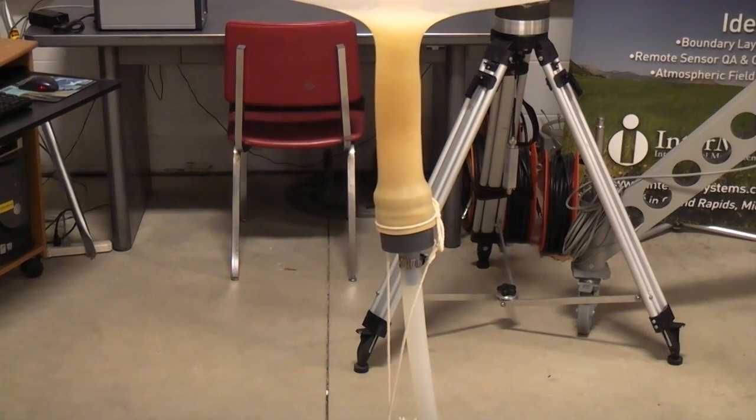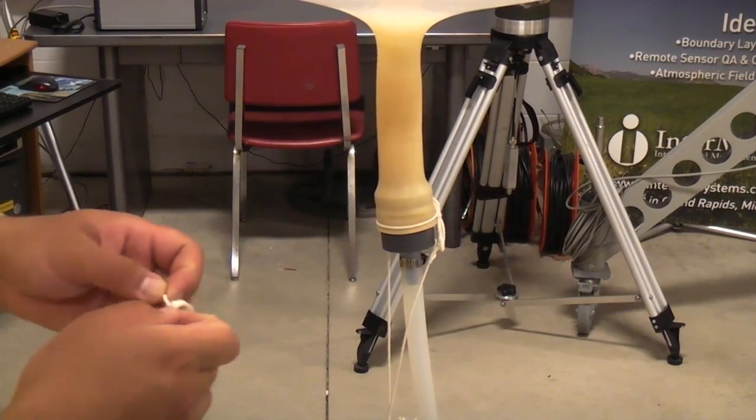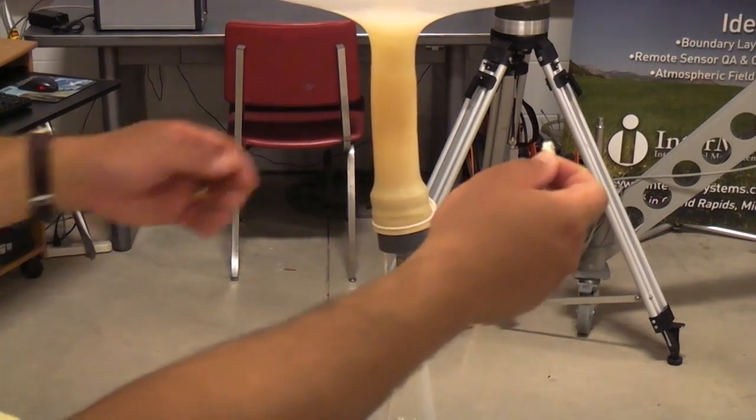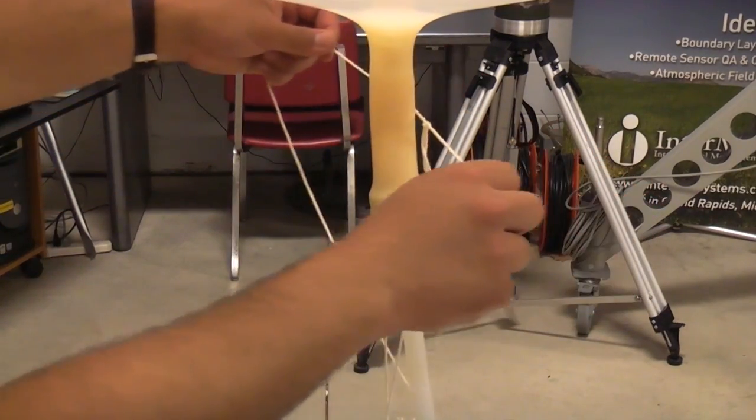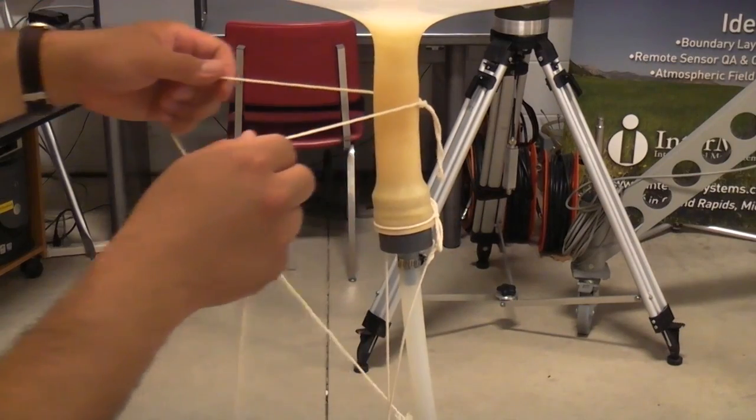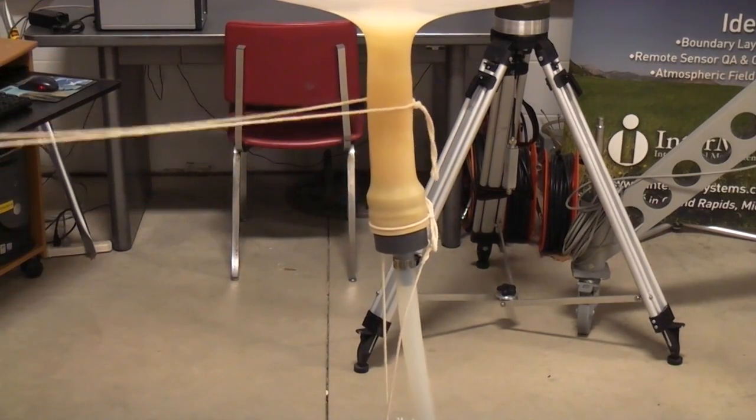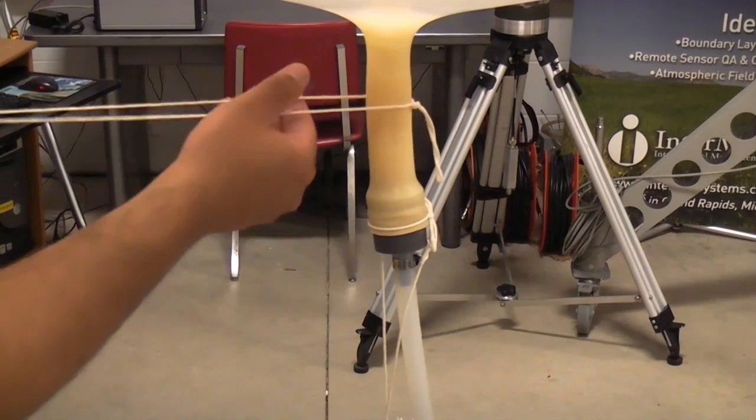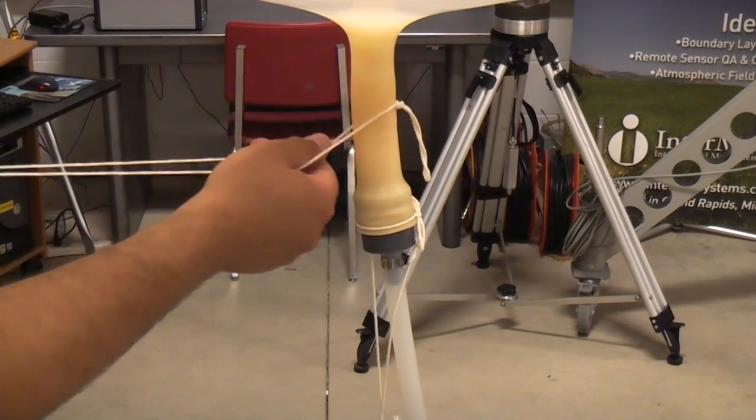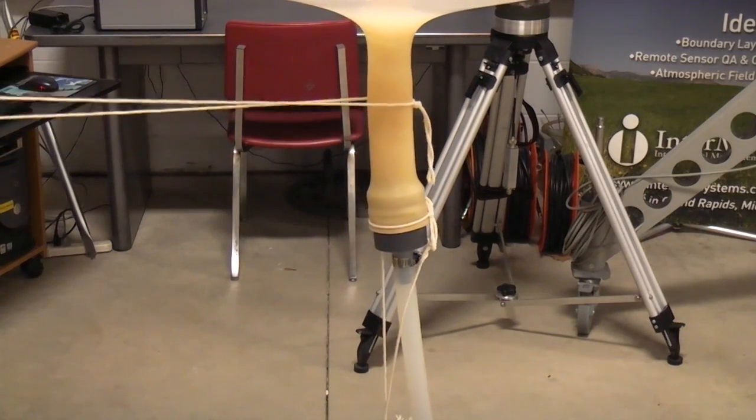Now we'll take the string and wrap it around the balloon to tie it off. I'll keep the loop that we created earlier on the opposite side of the balloon, and I'm about a few inches down from the top neck of the balloon.